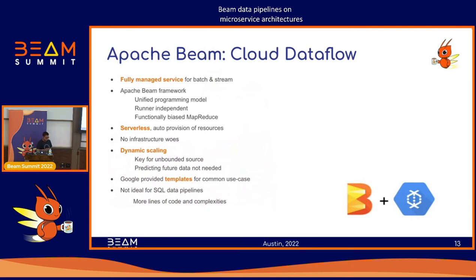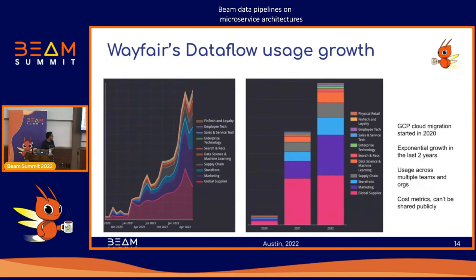Why Apache Beam and Cloud Dataflow? At Wayfair, we migrated to Google Cloud as our preferred vendor, which made the choice easier. The main reason for Dataflow is that it's serverless — no infrastructure hassle compared to Dataproc — and especially for streaming pipelines with unbounded sources, it provides very good scaling. This slide shows the usage of Dataflow at Wayfair: we started migration in 2020, and in the past two years there has been tremendous growth in Dataflow usage.